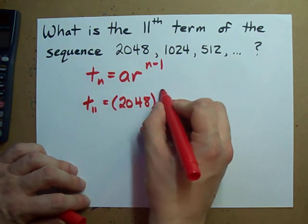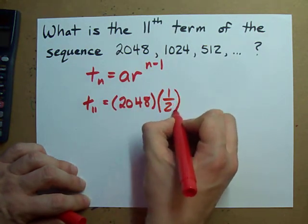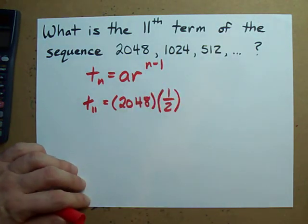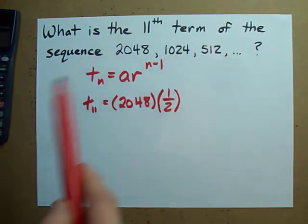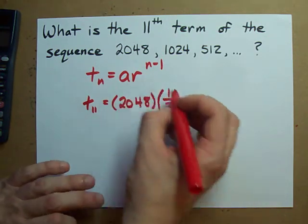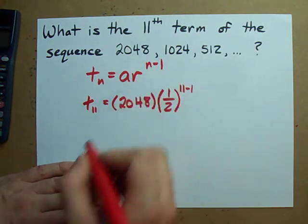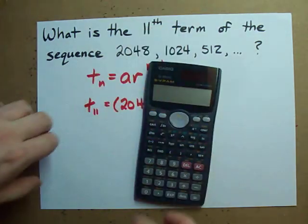My common ratio is one half because I'm multiplying by a half to get to the next term in the sequence. I'm looking for the eleventh term, and I have to subtract one because the formula says so.